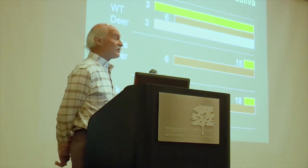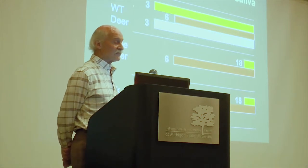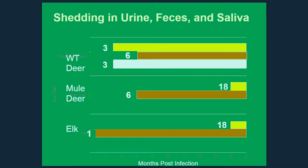Looking at when animals might be shedding across species: these are the earliest documented times, and animals may be shedding even earlier. For white-tailed deer, urine can be infectious within three months, feces within six months, and saliva within three months. So early on, these animals are fairly consistently shedding prions into the environment or to other susceptible animals.